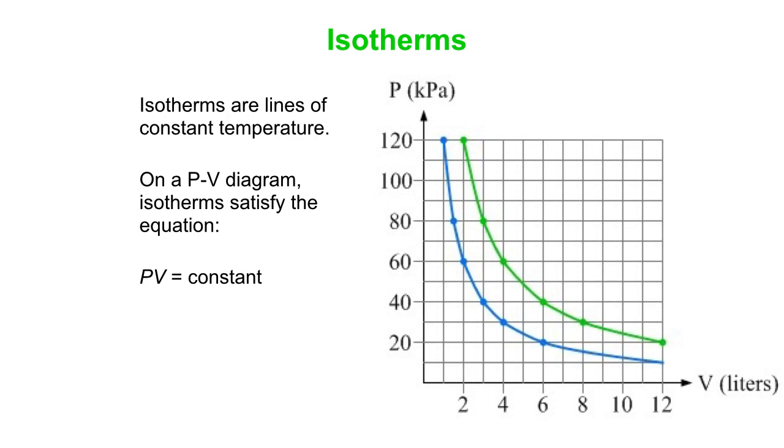So all the green points are the same temperature and all the blue points are the same temperature, but the points on the blue line are half the temperature as the points on the green line.